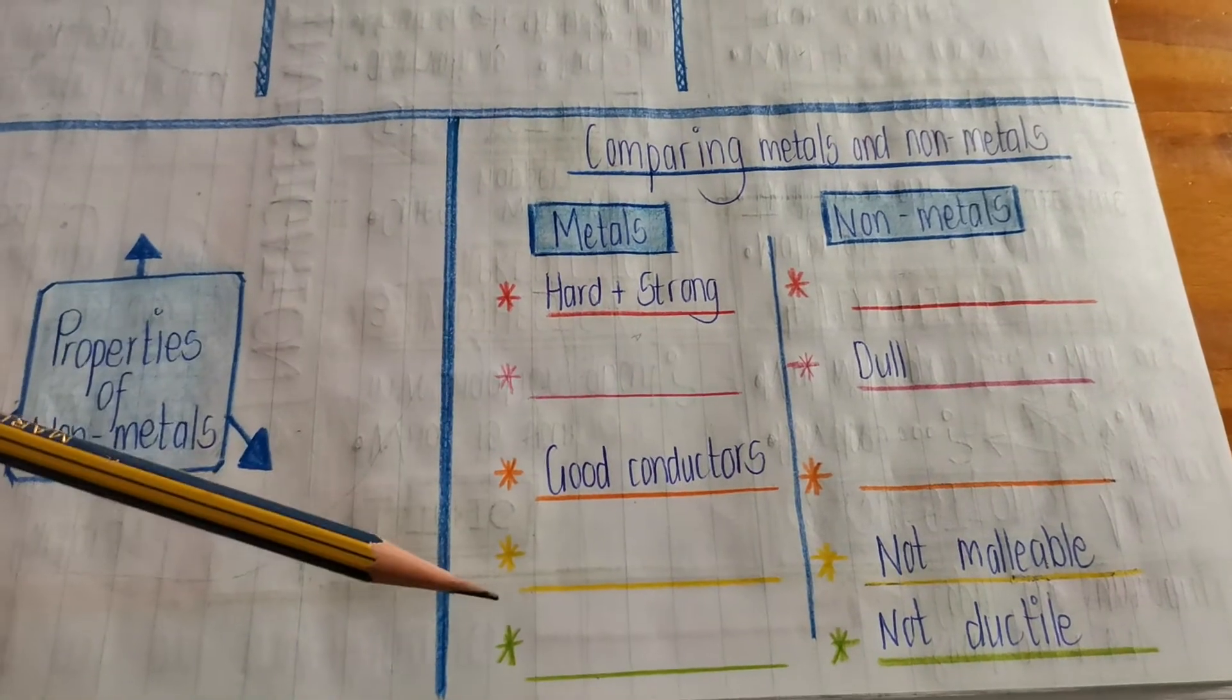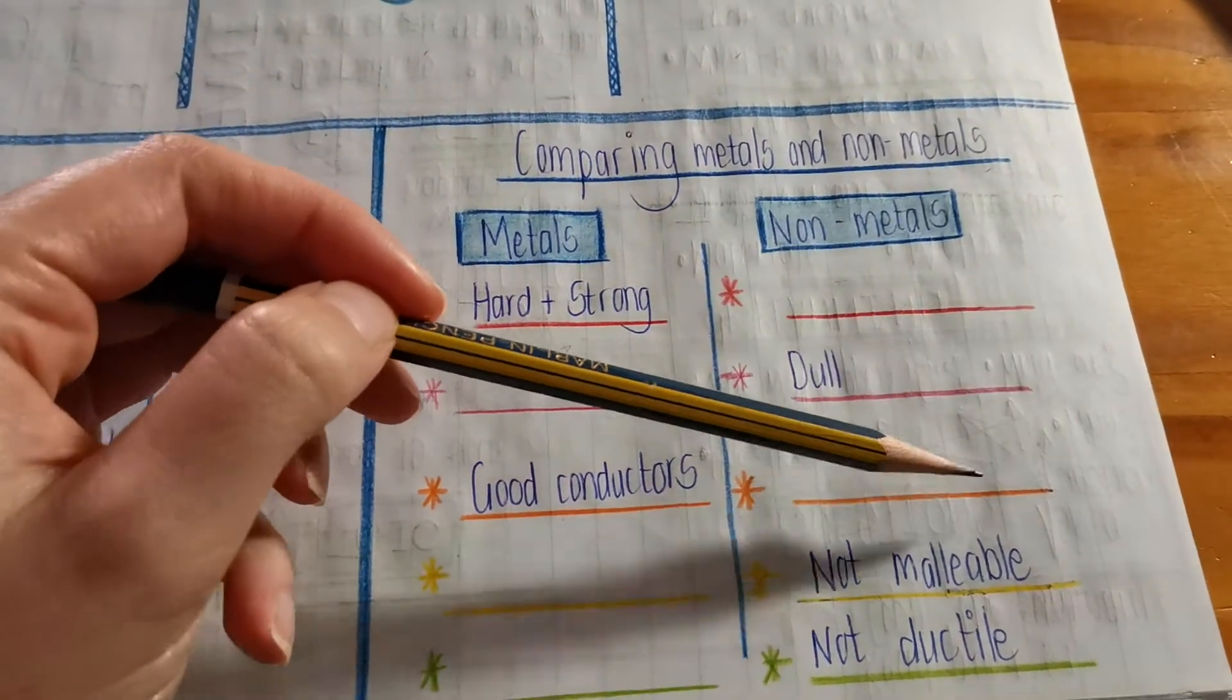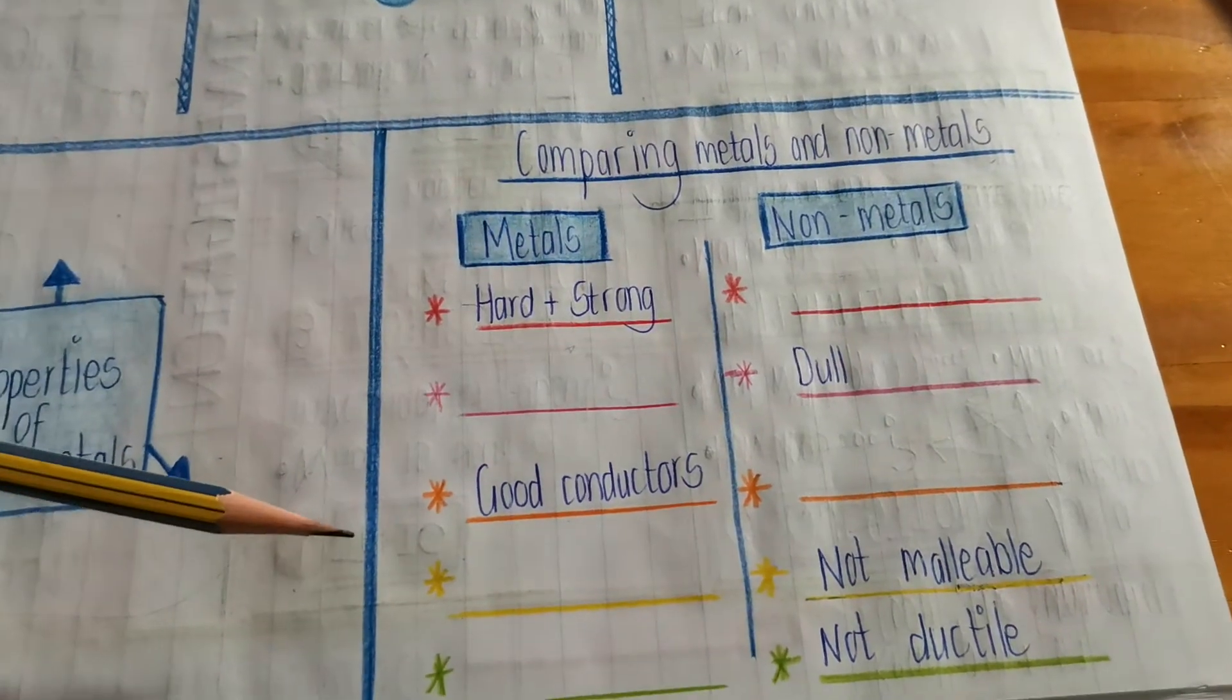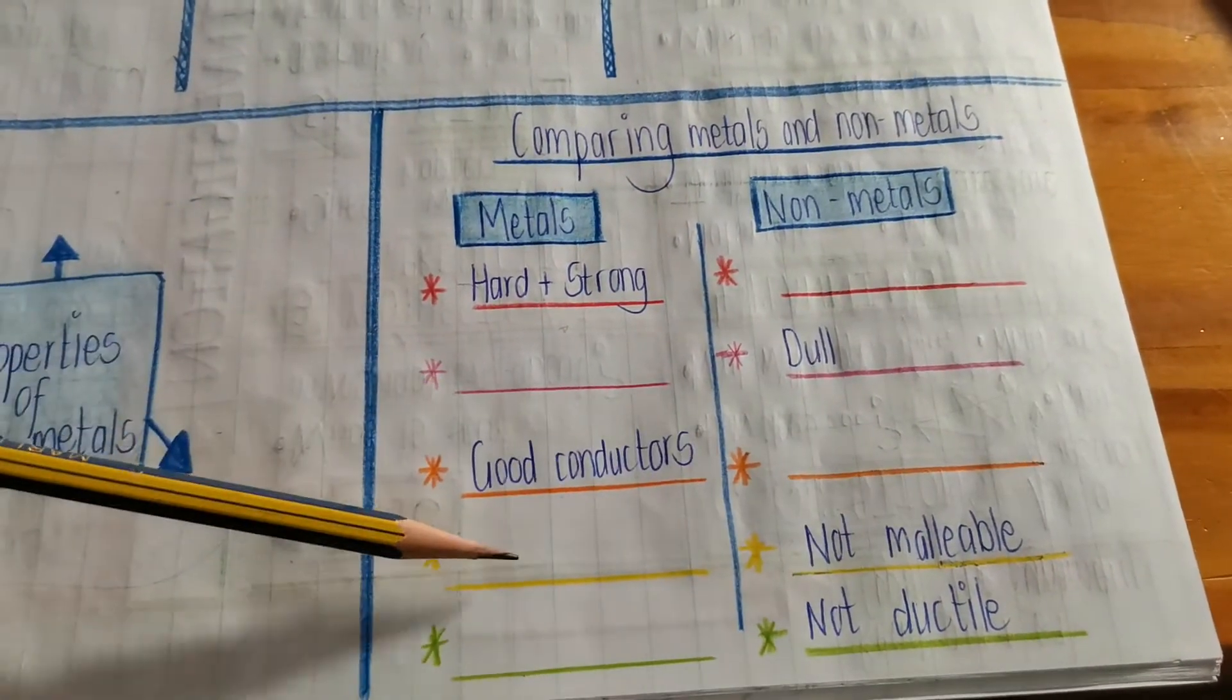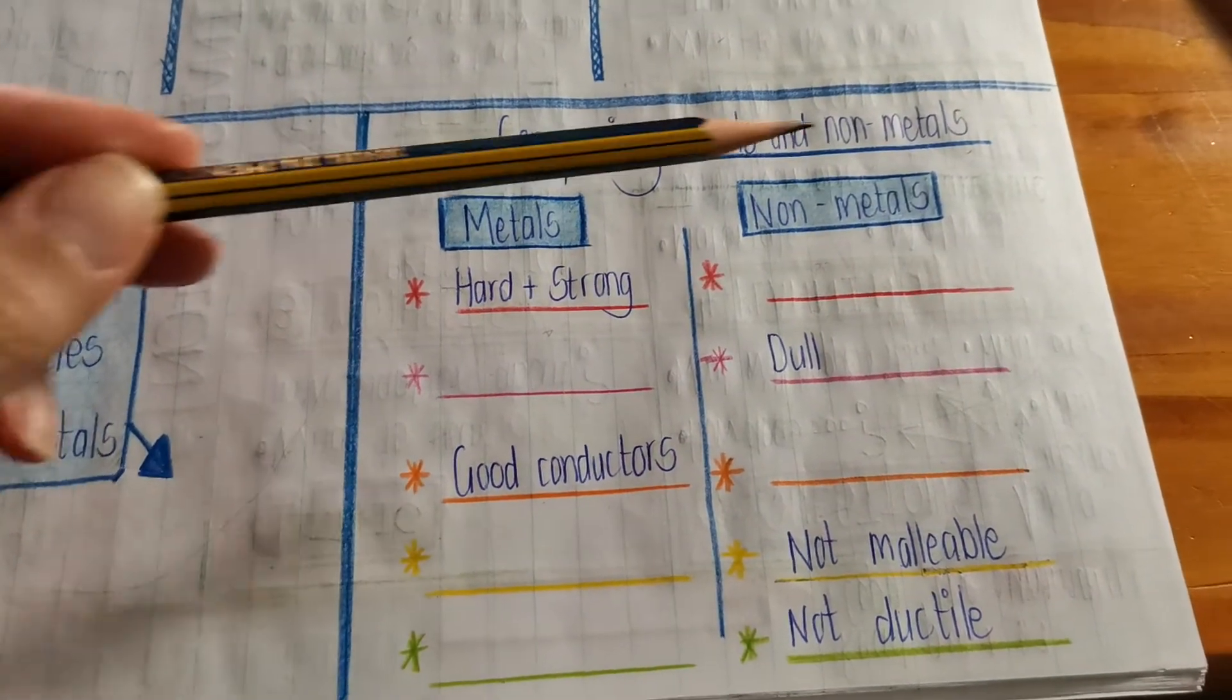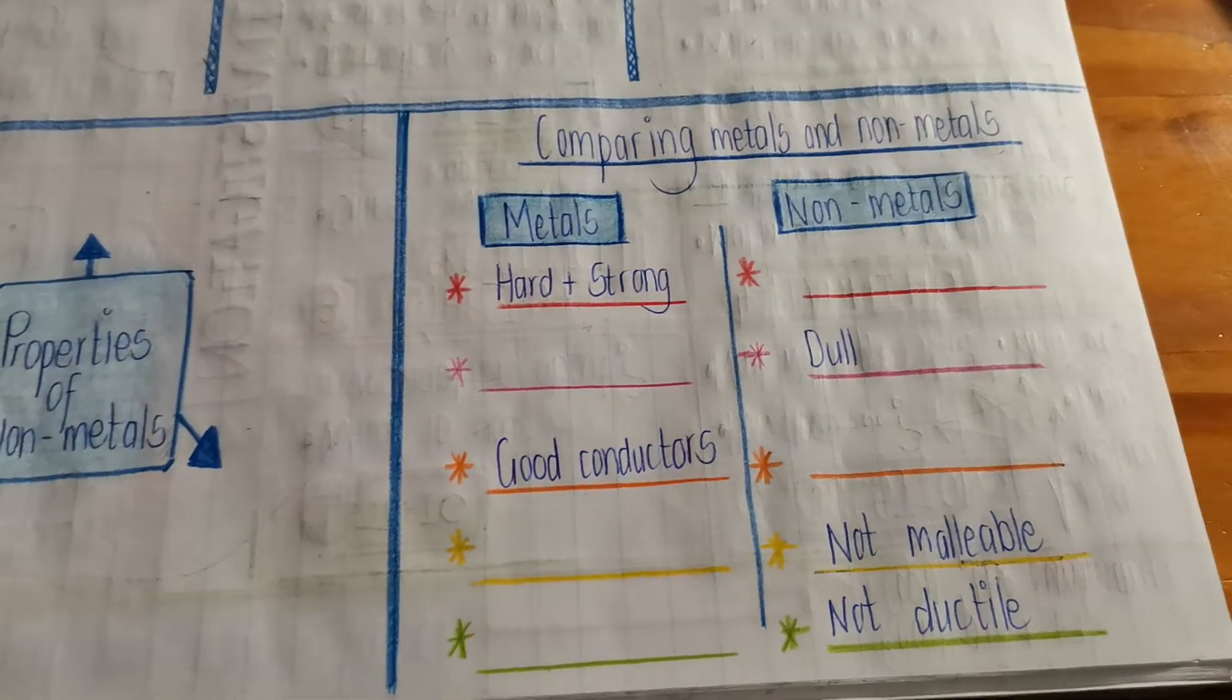It is brittle. If a non-metal is dull, metals are shiny. If metals are good conductors, non-metals are poor conductors. If a non-metal is not malleable, a metal is malleable. If a non-metal is not ductile, a metal is ductile.